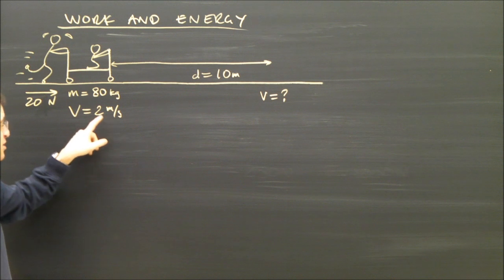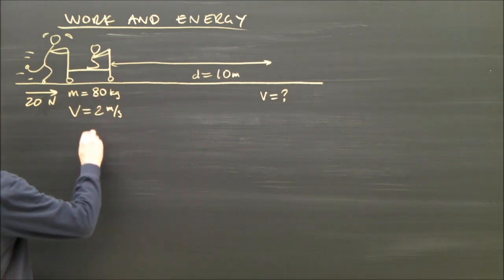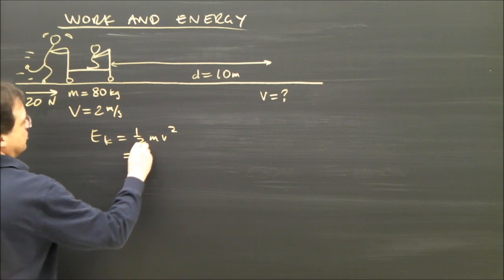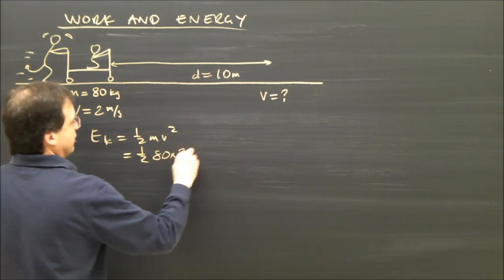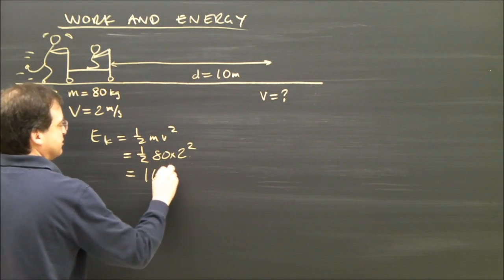But, how is it affected by the fact they're already moving? Well, they have some kinetic energy. How much kinetic energy do they already have? It's one half mv squared. So, it's one half times the mass times the speed they're going squared. That comes out to 160 joules.